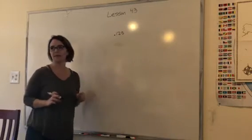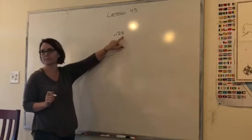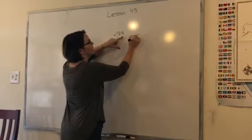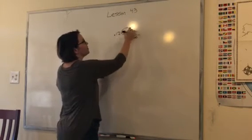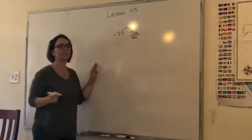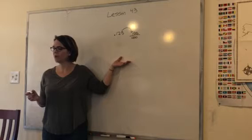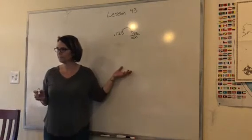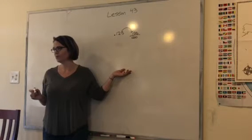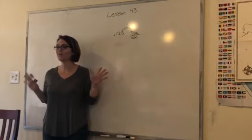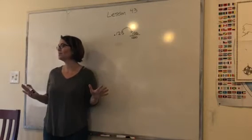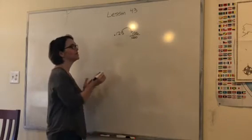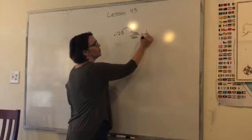We want to convert this guy into a fraction. So what place is he in? Where's the farthest number out? What place is this? Josh. Thousandths. It's the thousandths place. So the thousands becomes my denominator. And then this number's just going to jump on the boat. 125 over 1,000.